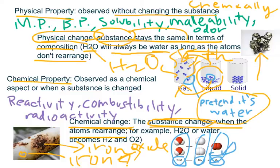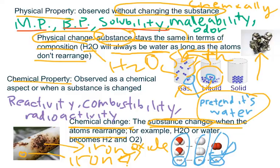Now let's hop back to the idea of physical properties. Physical properties are observed without changing the substance. Some physical properties include melting point, boiling point, solubility — or how much solute dissolves in a solvent — malleability, which is how easily a metal or substance deforms, and odor, which is the smell of a substance. We observe these without chemically changing anything, because melting and boiling are physical changes.